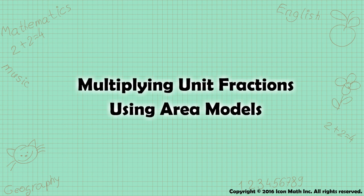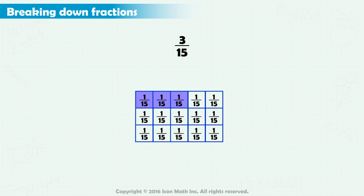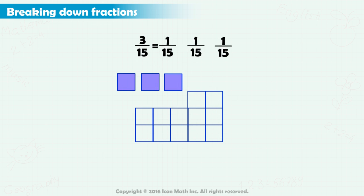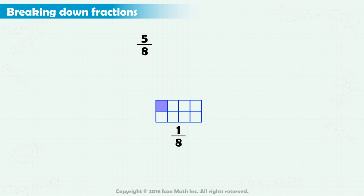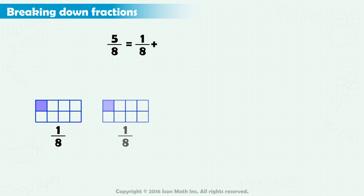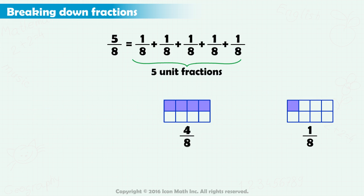Multiplying Unit Fractions Using Area Models. You learned earlier that given any fraction, we can use area models to break it down into a sum of its unit fractions. For example, 5 eighths could be seen as the sum of the unit fractions 1 eighth plus 1 eighth, 5 times, as you can see here on the area models.